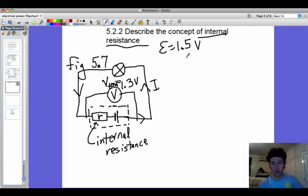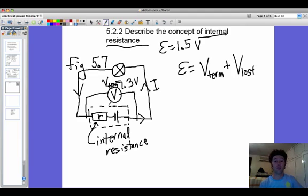The equation for that. You can think that the EMF which is always the biggest is going to be a sum of your terminal voltage which is always lower plus the voltage that you lose to this internal resistance. In this case let's say that's going to be 1.3 is our terminal and we're losing 0.2 volts which is bad.